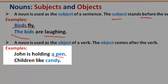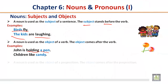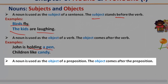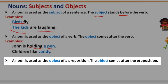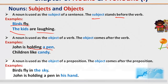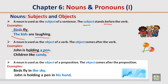This is an object because it comes after the verb, which is 'holding.' Children like candy. A noun is also used as the object of a preposition; the object comes after the preposition. For example: Birds fly in the sky. John is holding a pen in his hand.